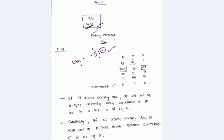That's why it will act as an n-type dopant, because the outermost electron in gallium is three but silicon is four. Similarly, if a silicon atom occupies arsenic, this arsenic outermost electron is five.